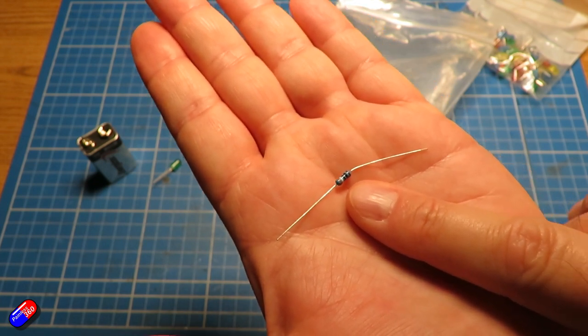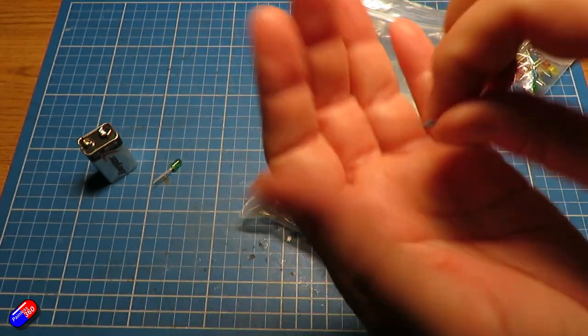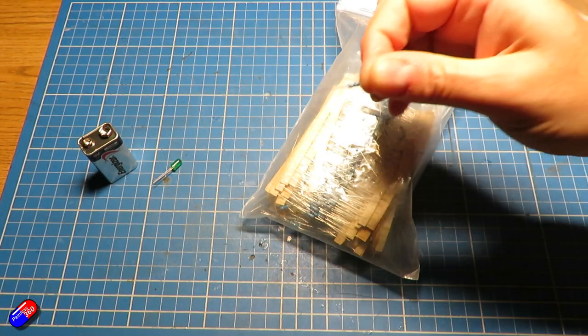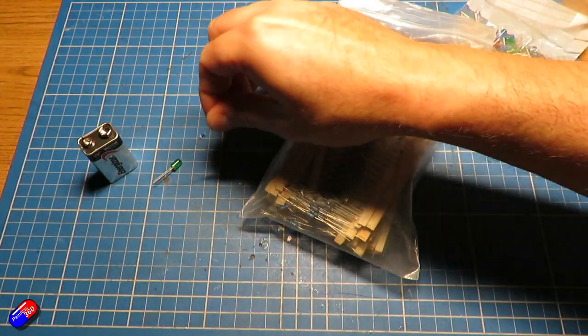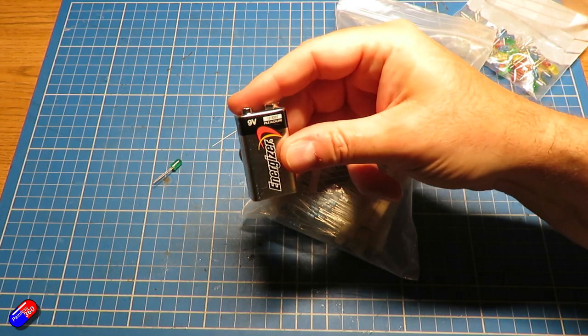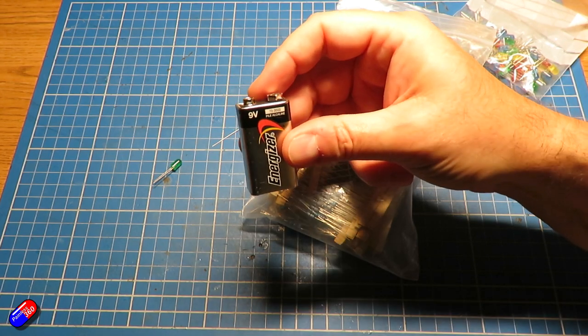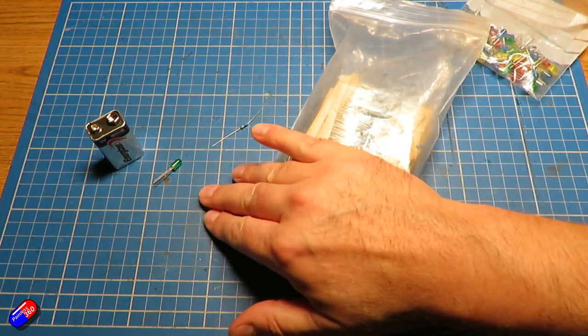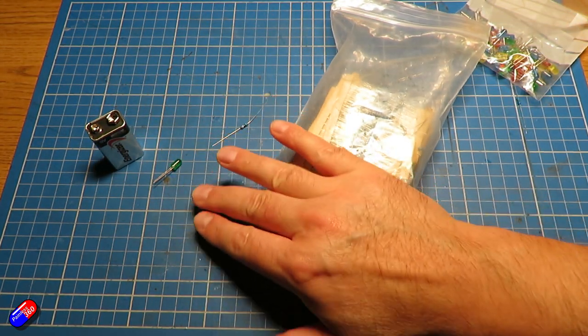This is there to make sure that the full voltage of the battery doesn't go across the LED and blow it up, because if you've ever tried to connect one of these LEDs to a nine volt battery you'll have seen it light briefly and then it never lights again. And that's because it needs only a couple of volts in order to work.